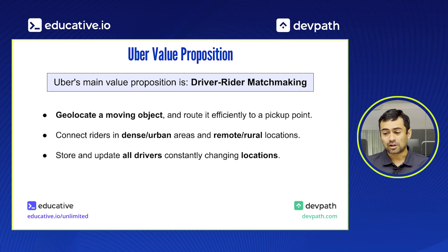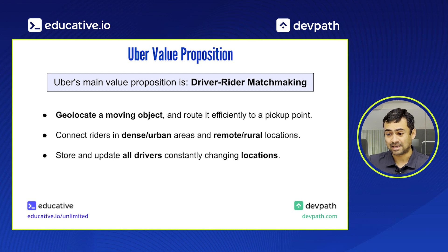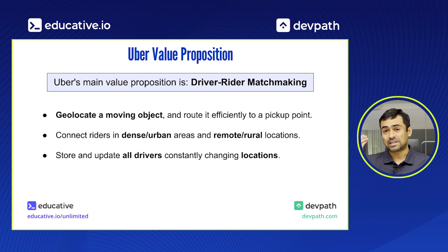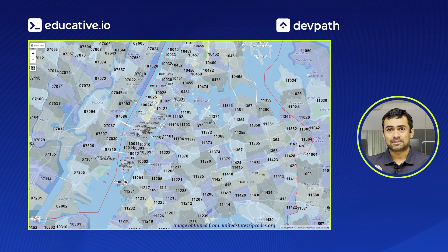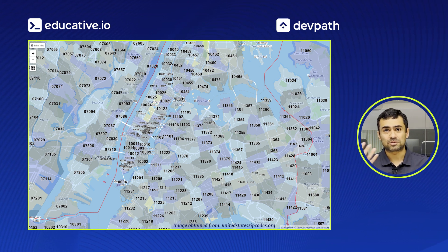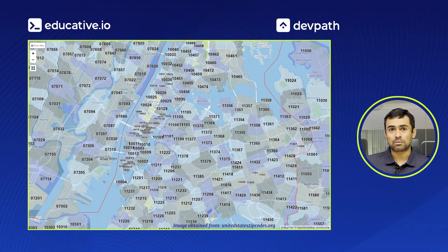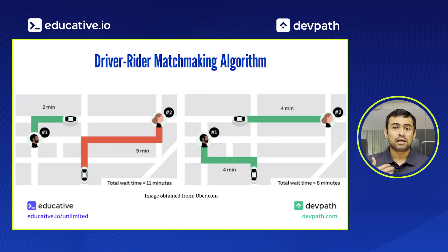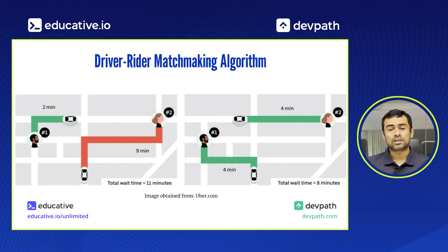The way Uber solves this problem — and this is part of the detailed design — is that they chunk each area into a unique set of coordinates. For example, their first chunking might be on zip codes, so they can say if you're in the same zip code, you're potentially in the same area. This solves the problem of areas with sparse riders and drivers. But it doesn't solve the problem of downtown Manhattan, where there are literally hundreds of drivers and riders in the same zip code. Then you'd have to use more sophisticated algorithms to find the nearest rider and driver based on additional information.